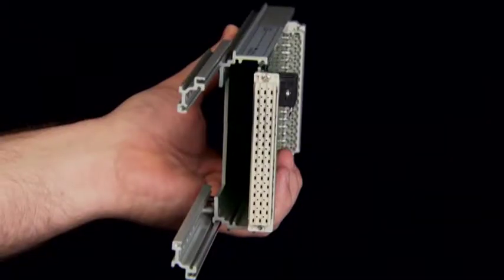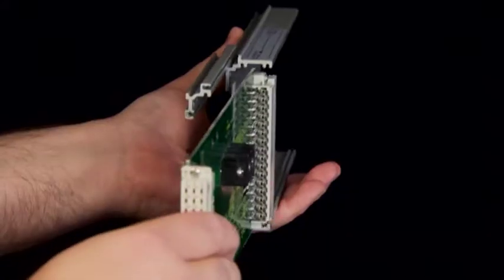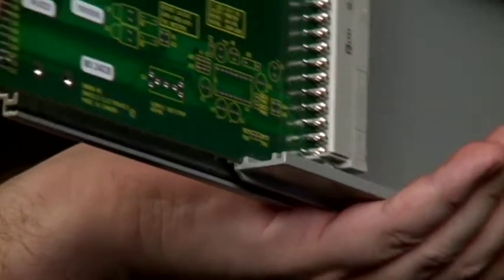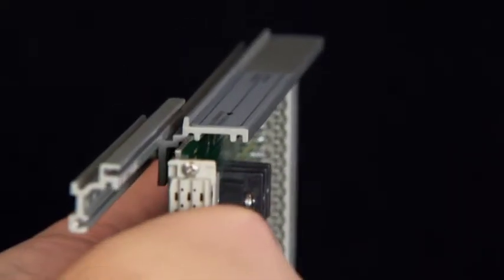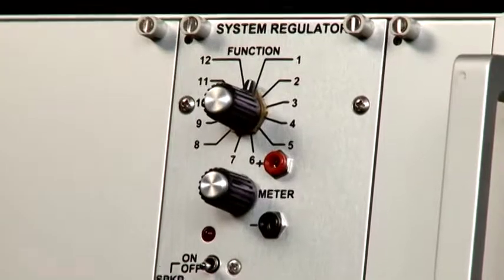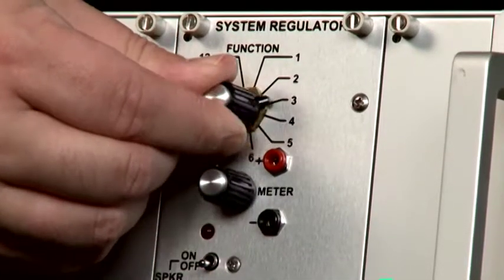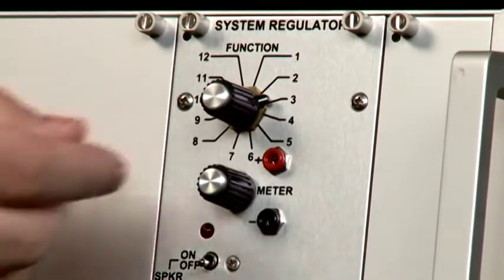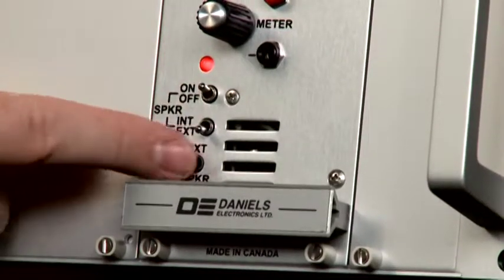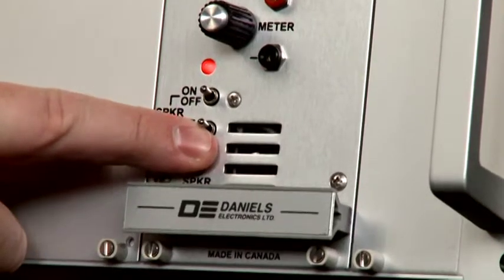Connect the receiver to the sub rack using an extender card. Ensure that the extender card is inserted in the inside rail of the extrusion for the receiver. The outside rail is for the transmitter. Turn the system regulator function rotary switch to position 3 for receiver A and position 5 for receiver B if used. Turn the speaker switch on and ensure it is set for internal speaker.